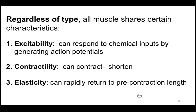All muscles are electrically excitable, meaning they can generate action potentials. They can shorten, and that's how they produce force. You can't move anything by lengthening a muscle cell — they can only pull. They're also elastic, meaning the cell springs back into its longer state after a contraction is over.